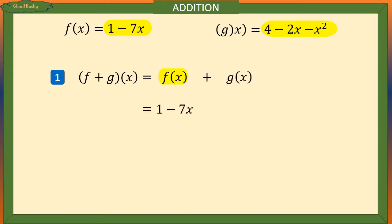f of x is equal to 1 minus 7x. We want to add this to g of x which is given as 4 minus 2x minus x squared.